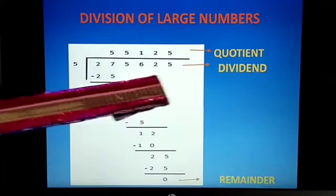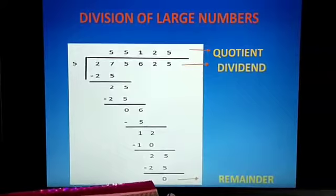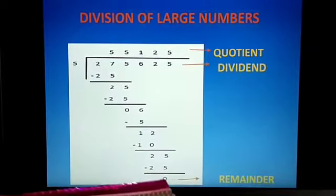This is the dividend. This is the divisor and this is the quotient. And the remaining answer is the remainder.